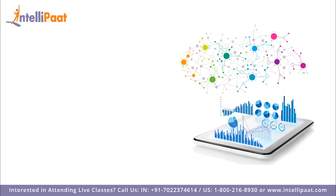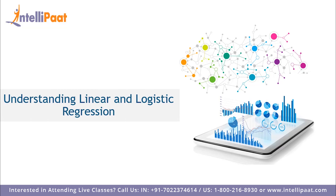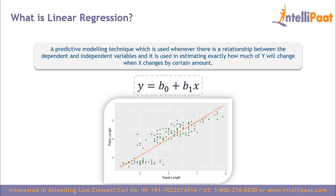Linear and logistic regression are the two most basic forms of regression commonly used. The essential difference is that logistic regression is used when the dependent variable is binary in nature, while linear regression is used when the dependent variable is continuous and the regression line is linear. Linear regression is a predictive modeling technique used when there is a relationship between the dependent and independent variables.